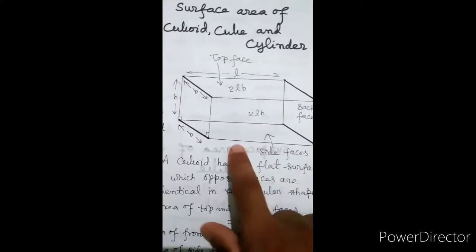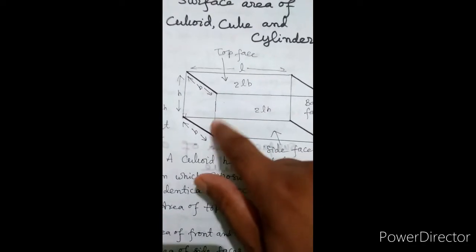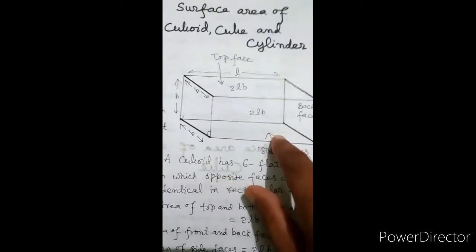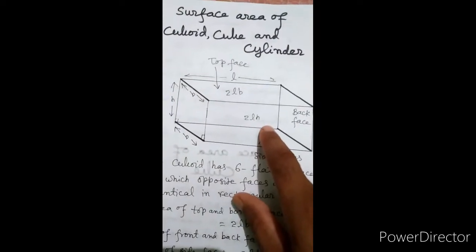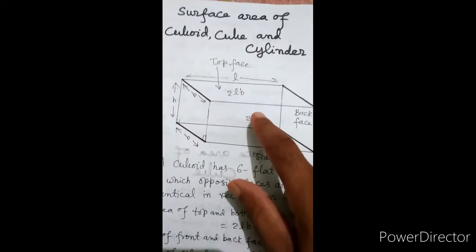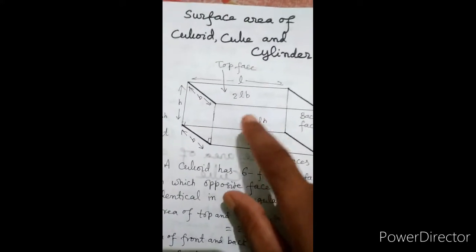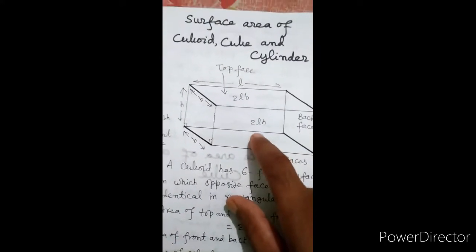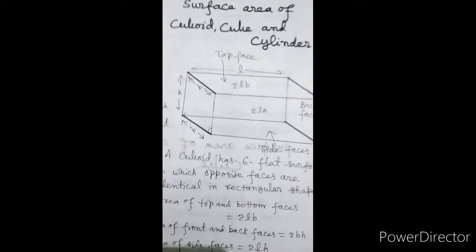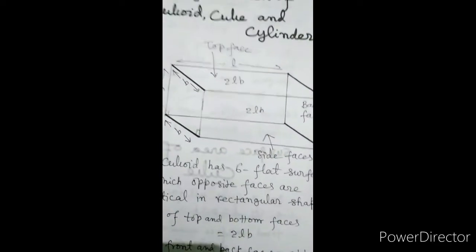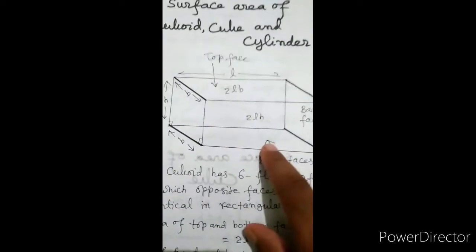This side has length and this side has height, so its area will be LH. The opposite face is also identical, so its area will also be LH. The area of these two side parts will be LH plus LH, that is 2LH.